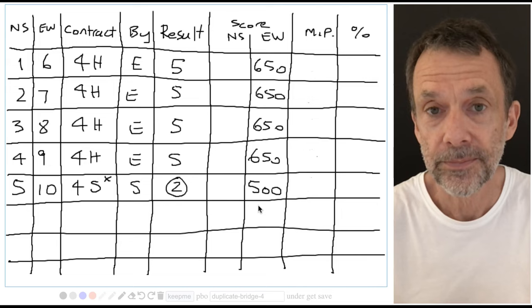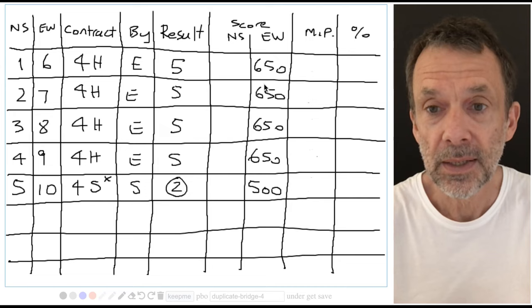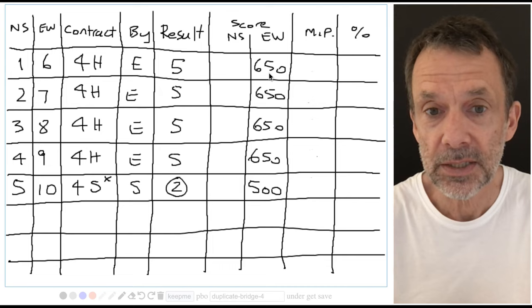Let's work out the match points. So pair one north-south score two match points for every pair they beat, and one match point for every pair they tied with. So how many pairs did north-south pair one beat?